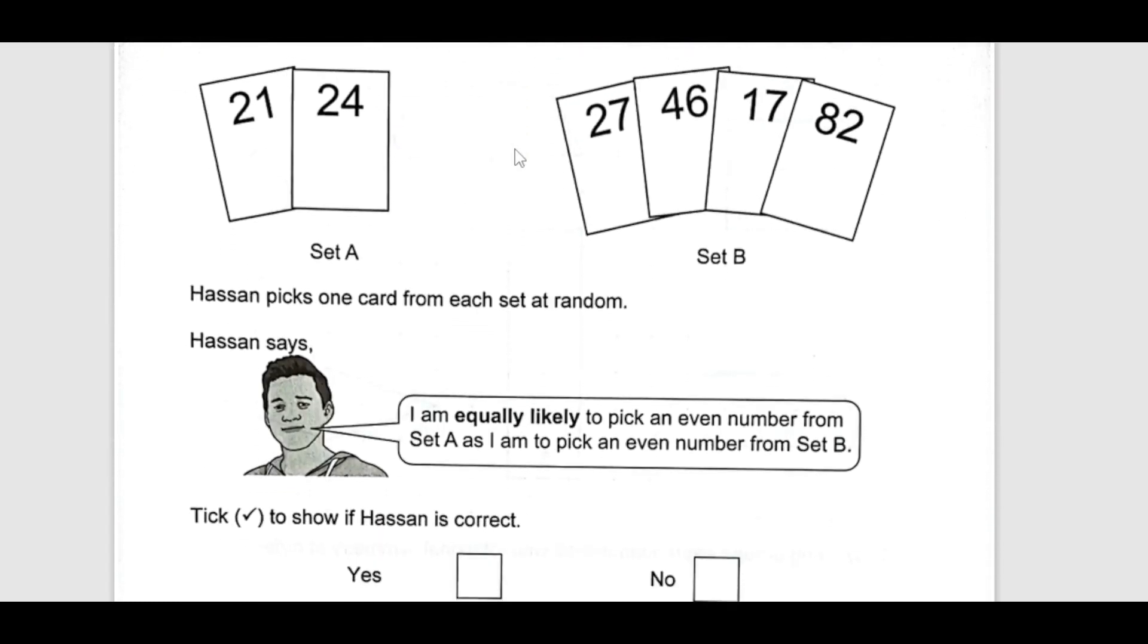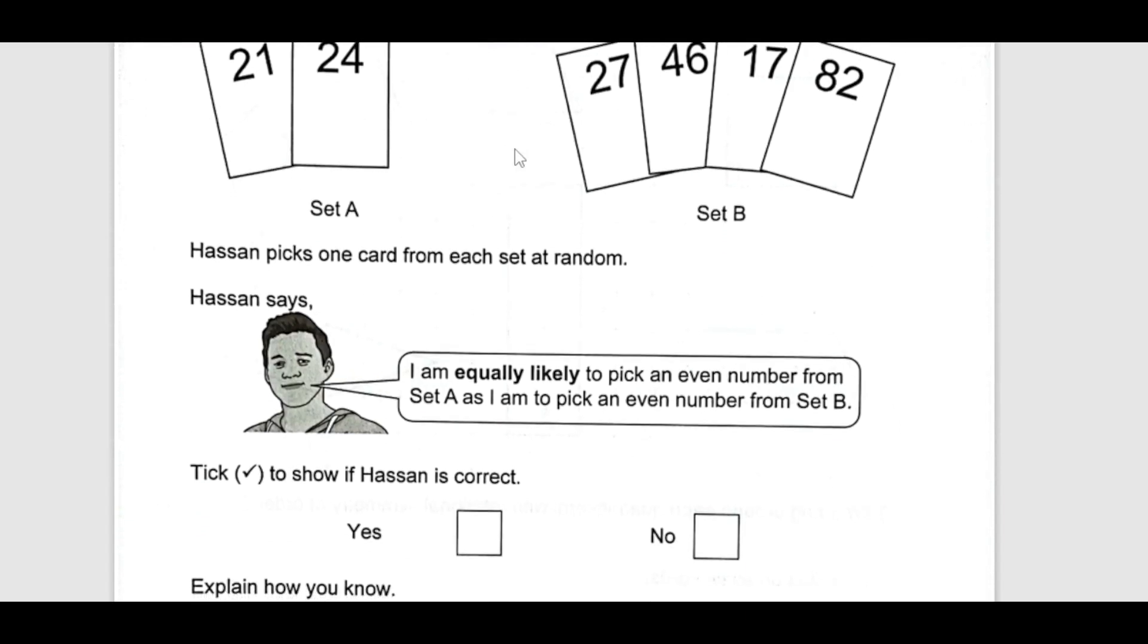Now, number 11, here are set of cards. You can see this is set A and then other one is set B. Hassan picks one card from each set at random and he says I am equally likely to pick an even number from set A as I am to pick even number from set B.